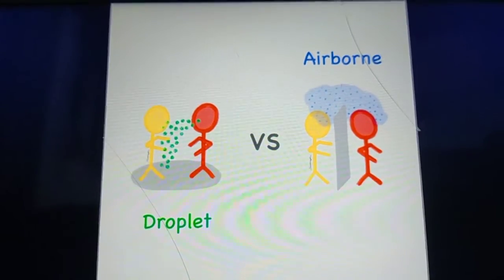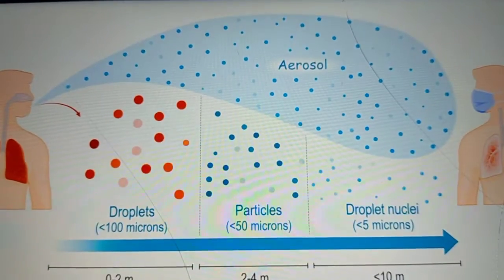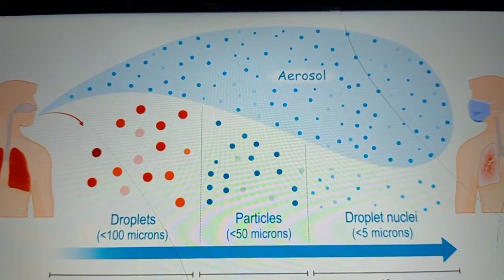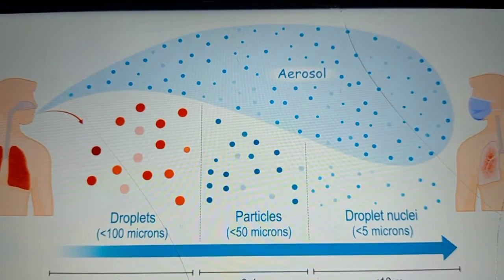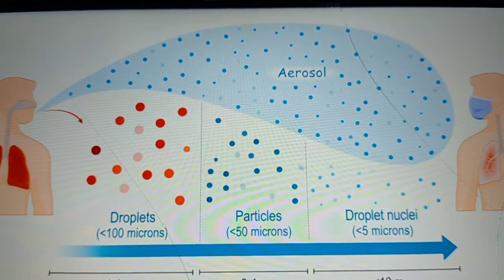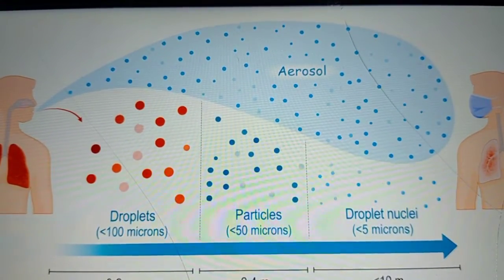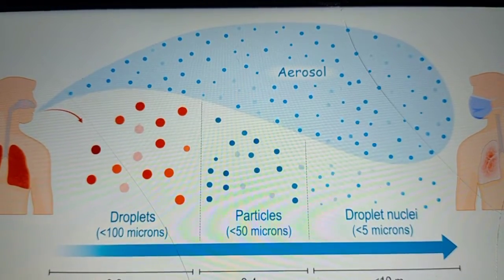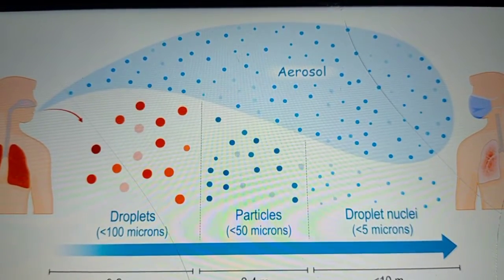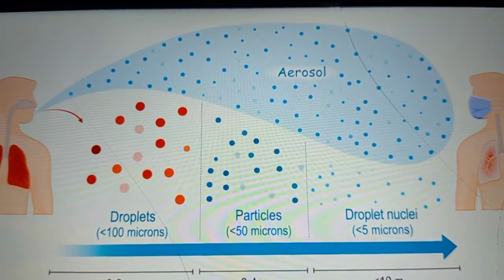The main difference between droplet and airborne transmission is the size of the droplets. Droplet infections are spread through large droplets which are more than 5 microns. A micron is a very tiny metric measurement — 1 millimeter equals 1000 microns. Just to put it in perspective: a human hair is 60 to 120 microns wide, and human red blood cells are about 6 to 8 microns wide. So these droplets, though called 'large,' are still smaller than a human hair.